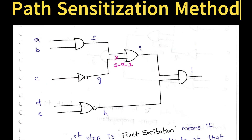Let us consider a random example. The circuit contains some random gates. If you observe, there is an AND gate, a NOT gate, a NOR gate, an OR gate, and again an AND gate. Here there is SA1, which means stuck at 1. The meaning of stuck at 1 is that particular line will be stuck at 1.